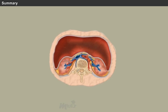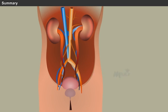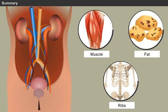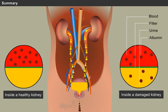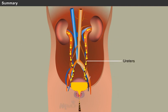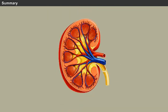Summary. The kidneys are a pair of bean-shaped organs on either side of the spine, in the retroperitoneal space between the parietal peritoneum and the posterior abdominal wall, well protected by muscle, fat, and ribs. The kidneys filter blood and form urine. They are part of the urinary system, which also includes the ureters, bladder, and urethra.